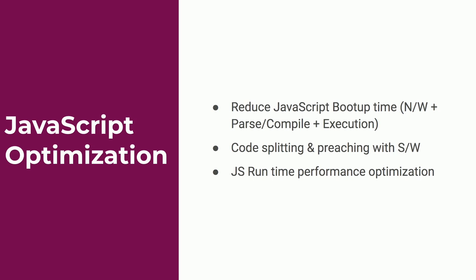JavaScript optimization, primarily in three categories: one is reduced JavaScript boot-up time, which covers the initial load of JavaScript. Two is code splitting with pre-caching using Service Worker — I'll talk about code splitting at route level and component level, and optimizing with Service Worker. Three is JavaScript runtime performance optimization, where I'll cover the RAIL model and how we implemented it.